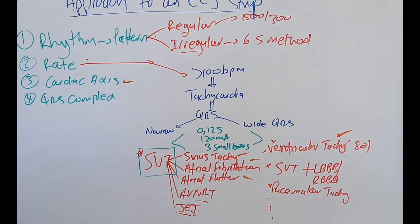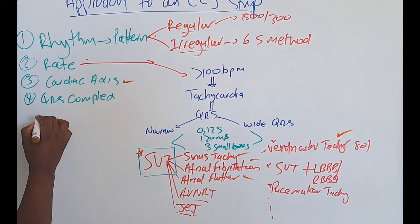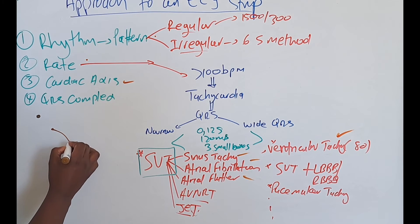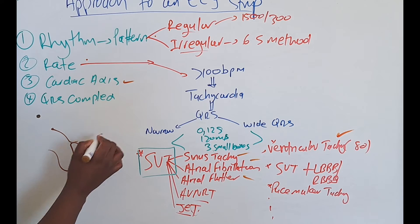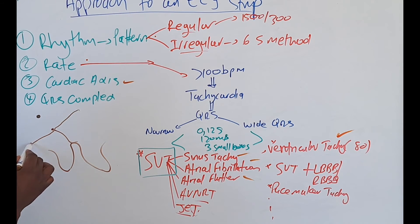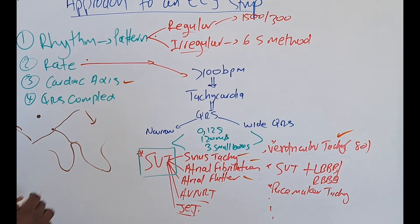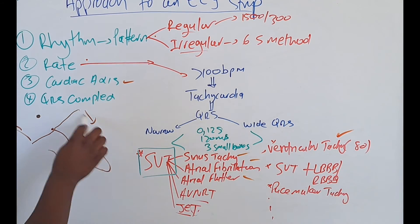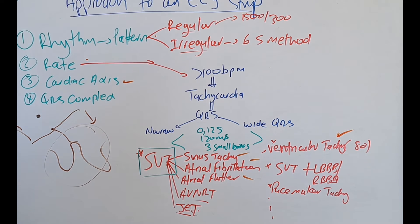Now before we forget — as we all know, the conduction system: we've got our SA node, we've got our AV node, then we've got our bundle of His, and we've got our left and right bundle branch. By definition, if you draw a line from the AV node going up, this is regarded as supraventricular. Anything below that line is regarded as ventricular. So sinus tachycardia, AF, and flutter are above this line — supraventricular. Ventricular tachycardia is below. Hence they are called ventricular, and the others are called supraventricular tachycardias.